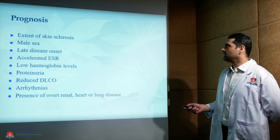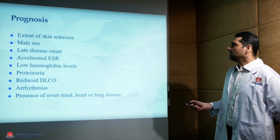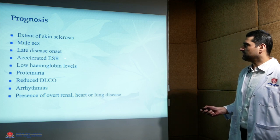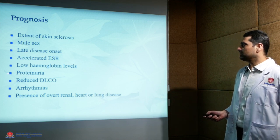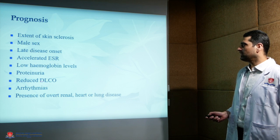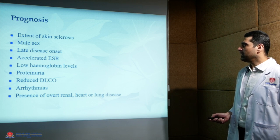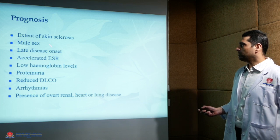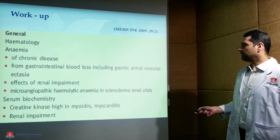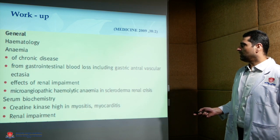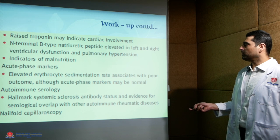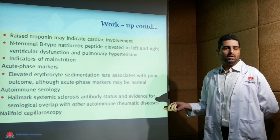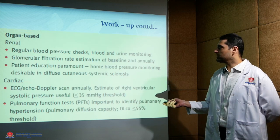Prognosis depends on the extent of skin sclerosis. Factors indicating poor prognosis include male sex, late disease onset, accelerated ESR, low hemoglobin levels, proteinuria, reduced diffusion lung capacity, arrhythmias, and presence of overt systemic disorder. Apart from basic workup, spirometry is needed to rule out interstitial lung disease, and barium swallow to rule out esophageal involvement.